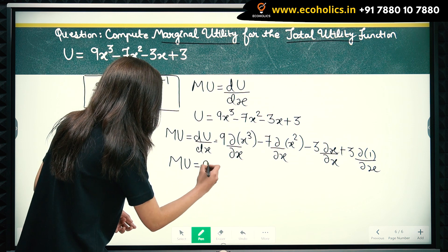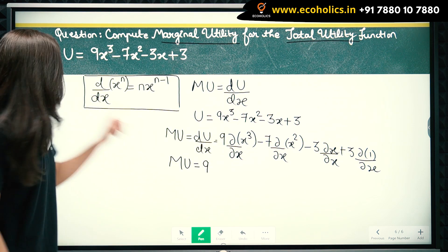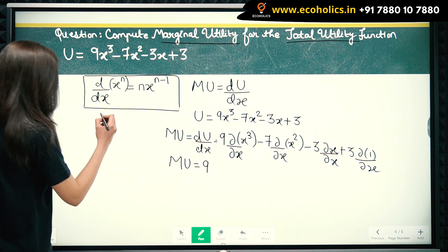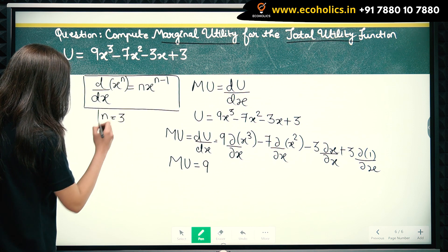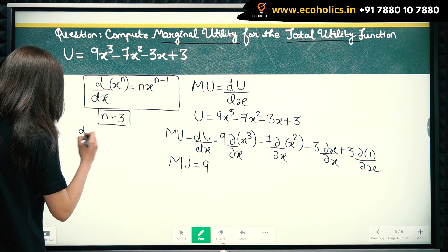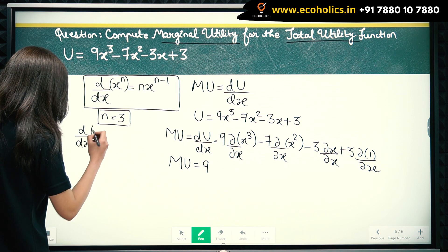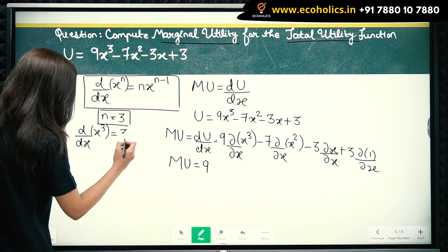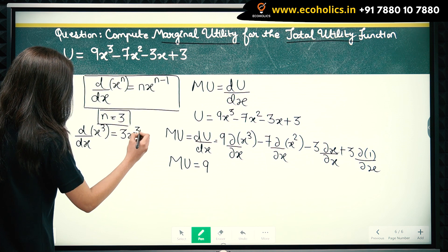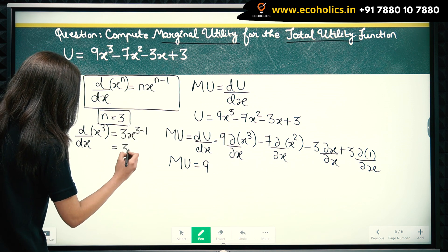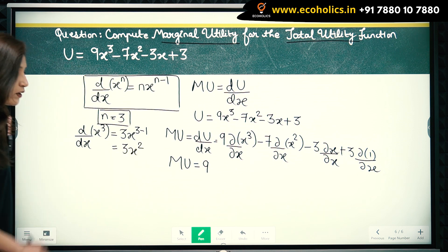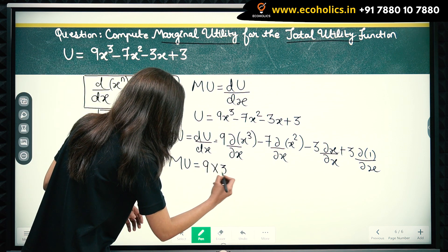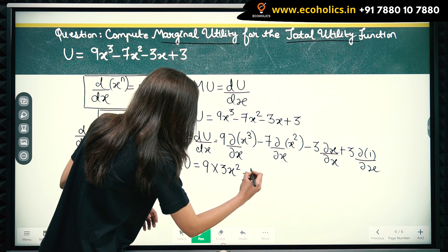We have x cubed, so using the formula with n equal to 3, the differentiation of x cubed is 3 times x raised to 3 minus 1, which equals 3x squared. So differentiation of x cubed is 3x squared. Next, minus 7 times the differentiation of x squared.